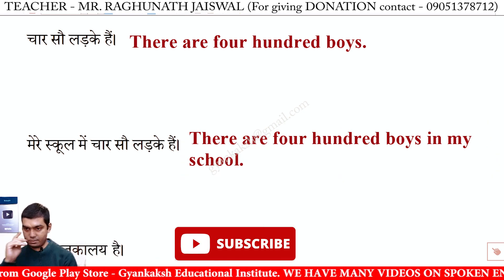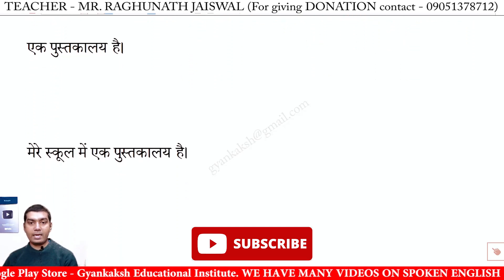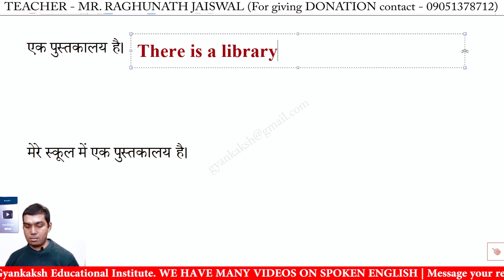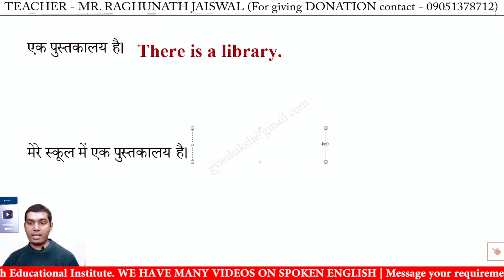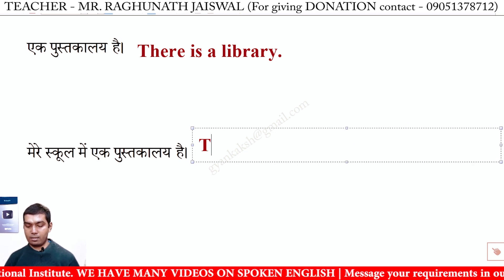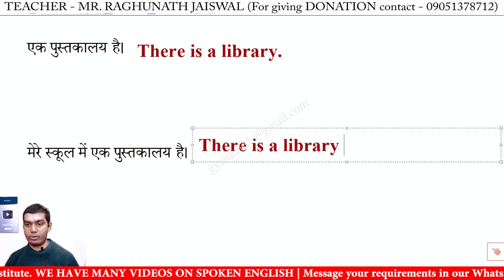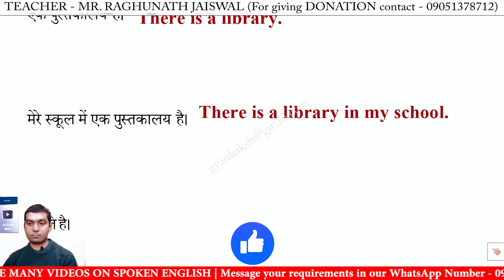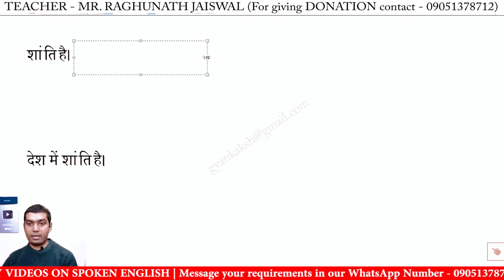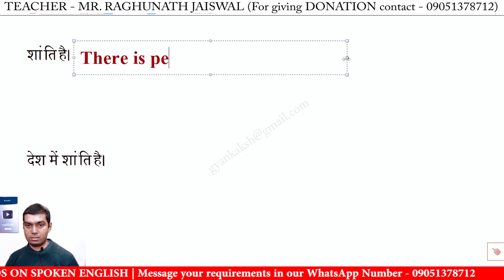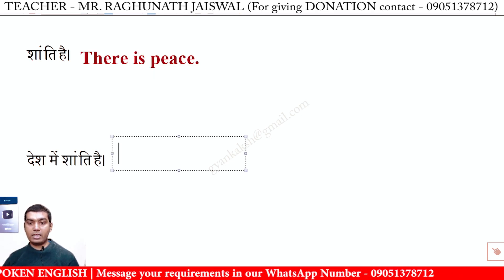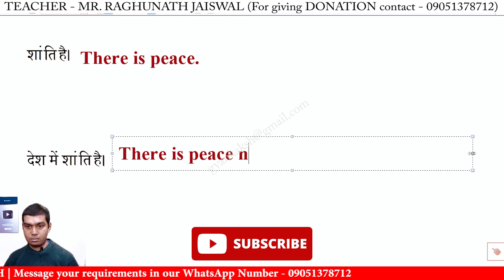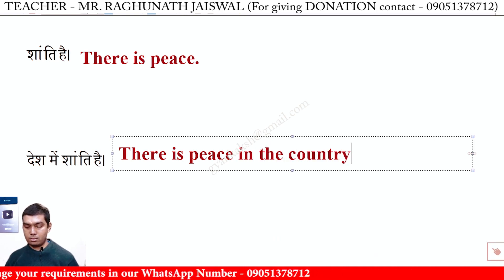Aek pustakale hai — There is a library. Mere school mein aek pustakale hai — There is a library in my school. Shanti hai — There is peace. Desh mein shanti hai — There is peace in the country.